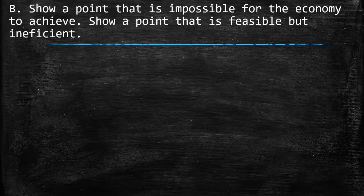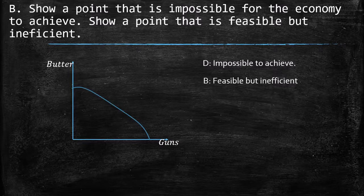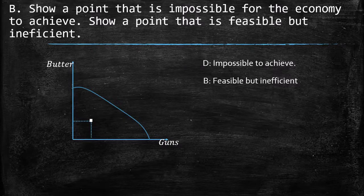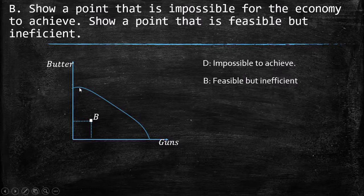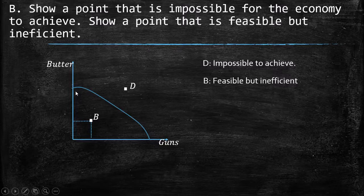Part B: show a point that is impossible to achieve and a point that is feasible but inefficient. We have point D, which is impossible to achieve, and point B, which is feasible but inefficient. Point B is inside the frontier — the economy can be there but is not using all factors of production, so it is feasible but inefficient. Point D is outside the frontier — it would require more goods of both butter and guns than the production possibilities frontier allows, so we cannot reach it.